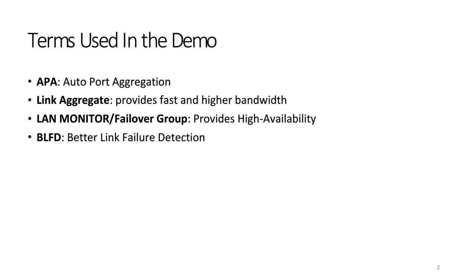There are two types of aggregates. The first one is Link Aggregate, which is used to provide fast and higher bandwidth network connections to the server. Secondly, Failover Groups, also known as LAN Monitor, is another type of port aggregation used to provide high availability network connections to the server.